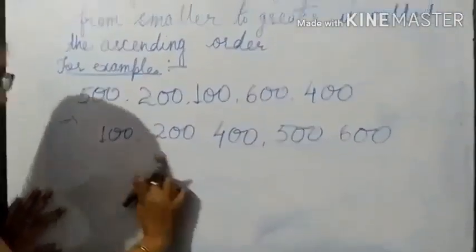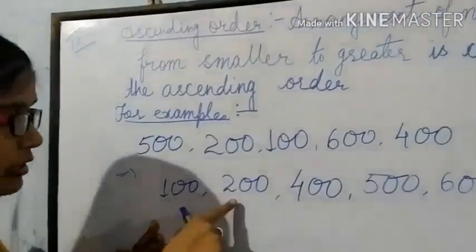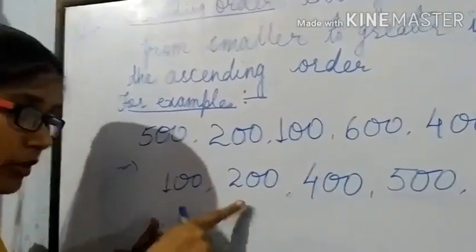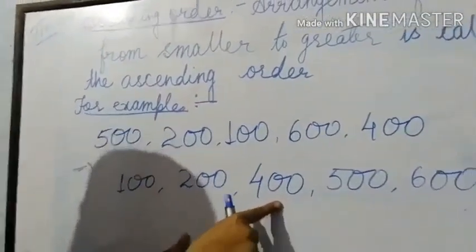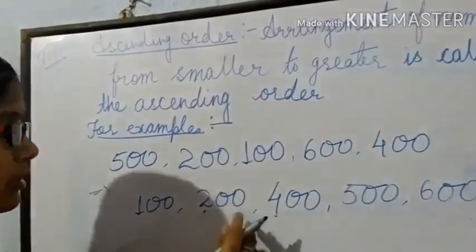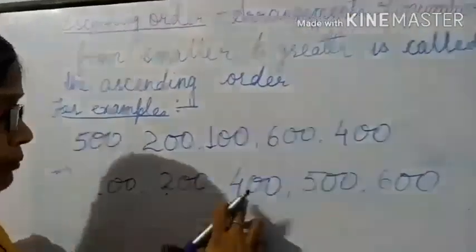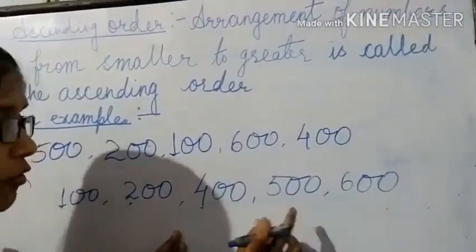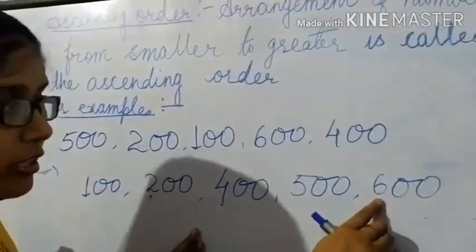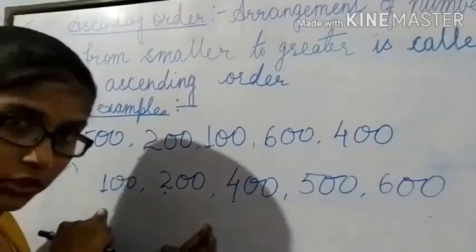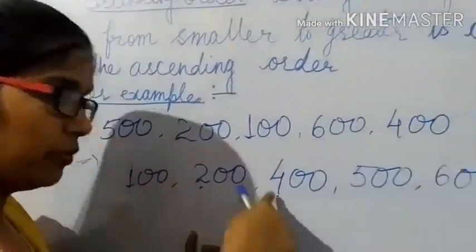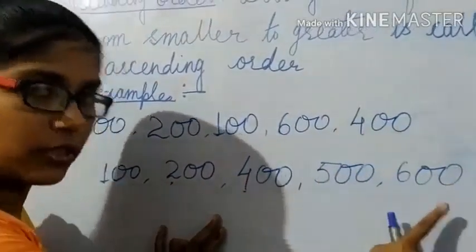Now see — I have arranged the given numbers in ascending order. 100 comes first. Then 200, which is greater than 100. Then 400, which is greater than 200. Then 500, which is greater than 400. And finally 600. All are 3-digit numbers, so we look at the 100's place to arrange them from smallest to largest.